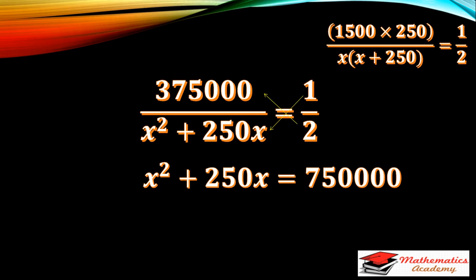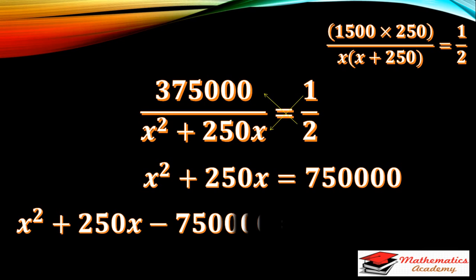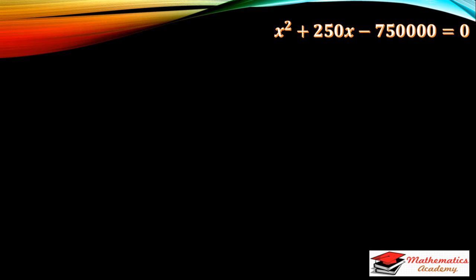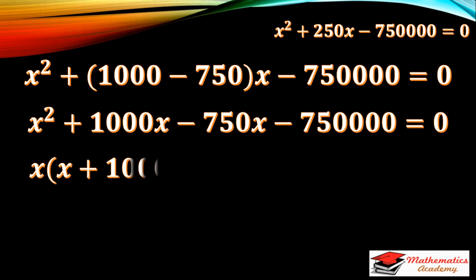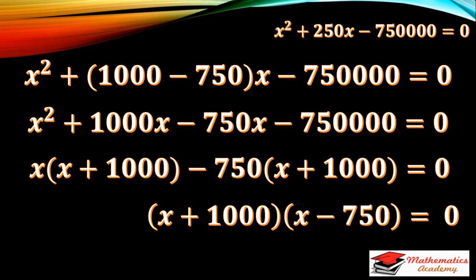This is a quadratic equation which may be solved using any one method. Shifting 375000 from the right to the left, we use the factoring method and split 250 into two parts: 1000 and negative 750. Multiplying these gives 750000, and subtracting gives 250 as the middle term. Expanding, we get the two factors: X plus 1000 and X minus 750.